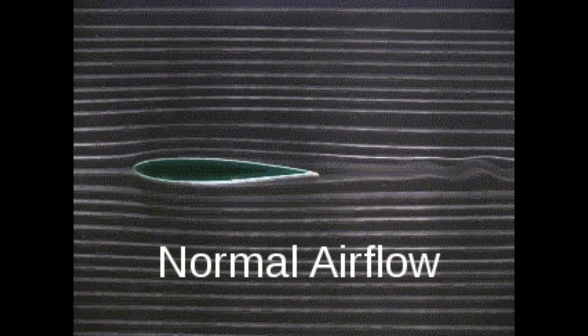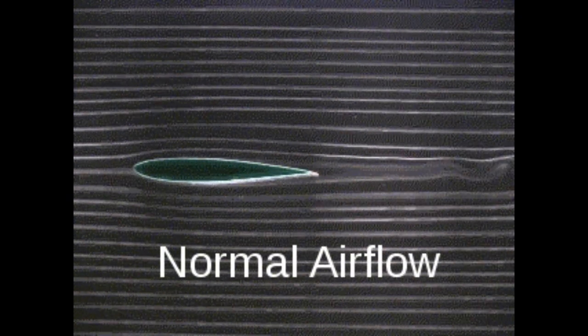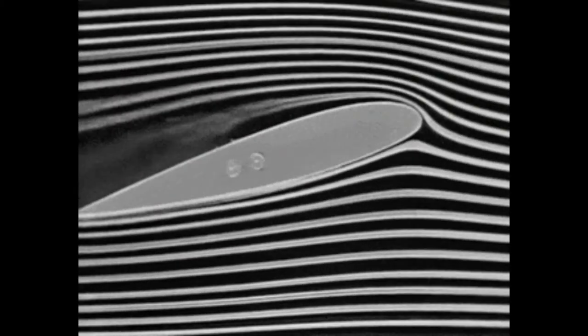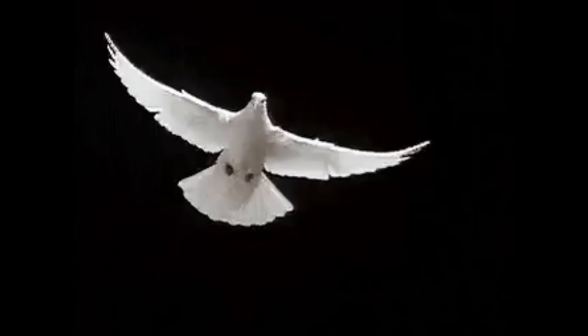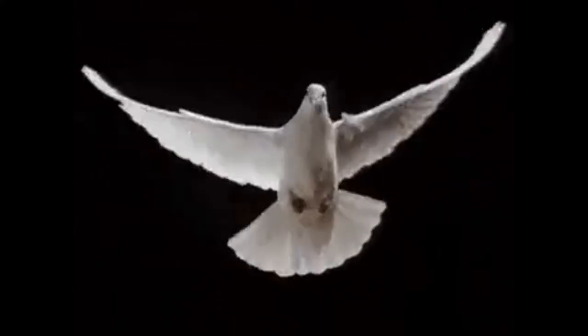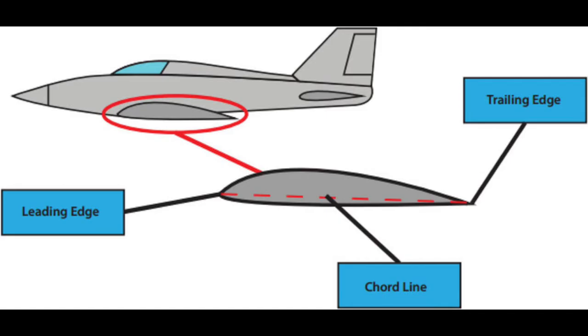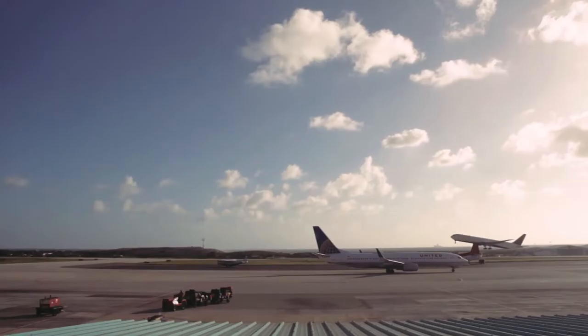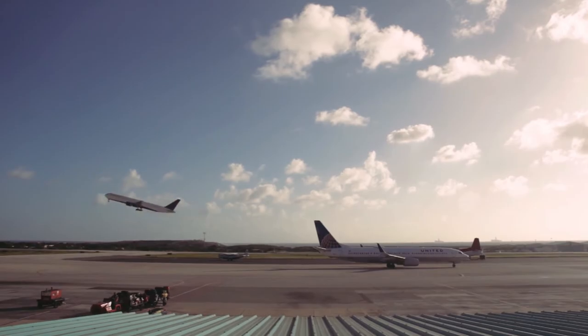As air flows over the surface of a wing, it sticks slightly to the surface it is flowing past and follows the shape. If the wing is angled correctly, the air is deflected downwards. The action of the wing on the air is to force the air downwards, while the reaction is the air pushing the wing upwards. A wing's trailing edge must be sharp and aimed diagonally downwards to create lift. Both the upper and lower surfaces of the wing act to deflect the air.